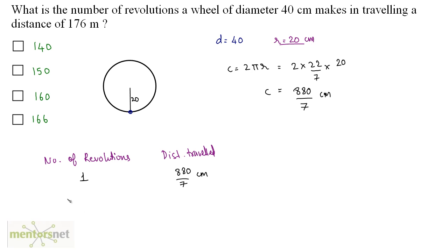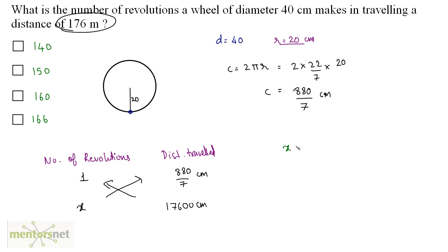Now we have been asked in how many revolutions — that means the number of revolutions required to travel a distance of 176 meters. So 176 meters can be written as 17600 cm. Cross multiply and equate to get the value of x: x times 880/7 equals 17600, so x is equal to 17600 divided by 880 times 7.